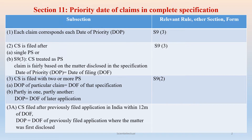Section 11, Subsection 1 says there shall be a priority date for each claim of a complete specification. Subsection 2: where a complete specification is filed in pursuance of a single application accompanied by either (a) a provisional specification, i.e., complete specification is filed after a single provisional specification, or (b) a specification treated by virtue of a direction under subsection 3 of Section 9 as a provisional specification, i.e., a complete specification is treated as provisional and then a new complete specification is filed later — in both cases, if the claim is fairly based on the matter disclosed in the specification, then the priority date of that claim shall be the date of filing of the relevant specification.